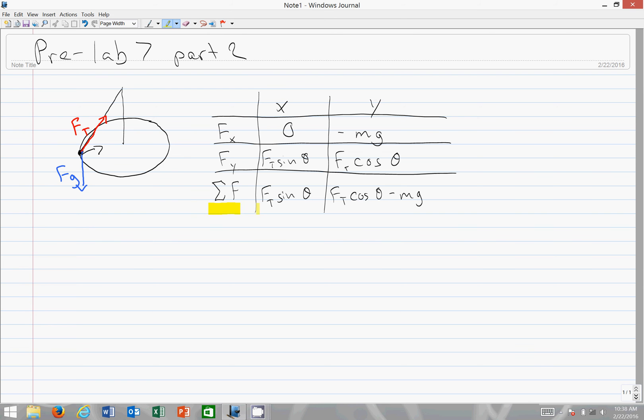Now I've written out all my forces in this table I have here, that I just highlighted, and I have here that the summation of my X forces is equal to FT sine theta, and the summation of my Y forces is equal to FT cosine theta minus MG. Now these equations are equal to MA of course, because F net is equal to MA, so let's write it out here.